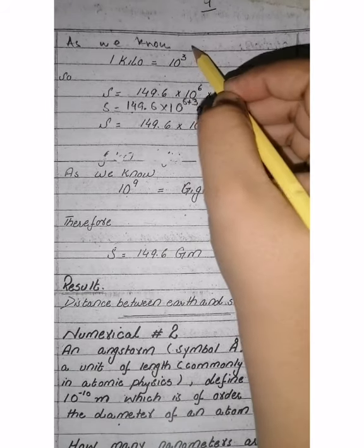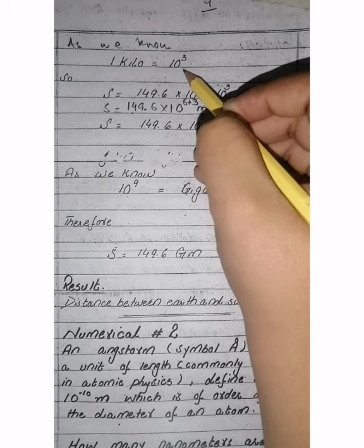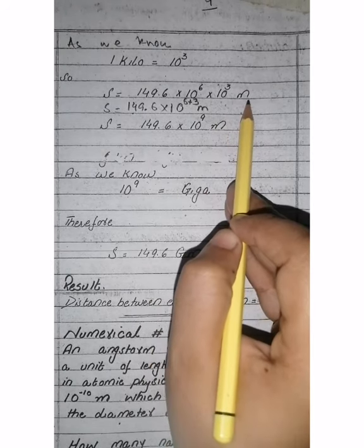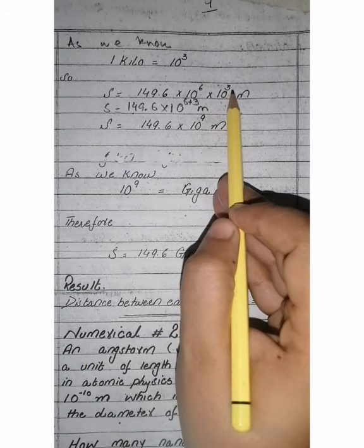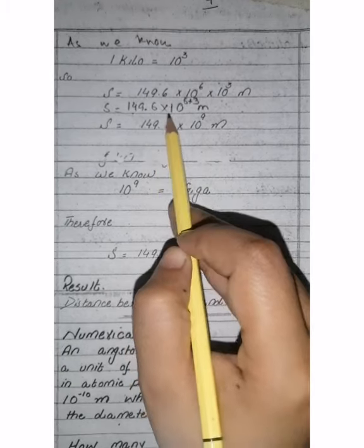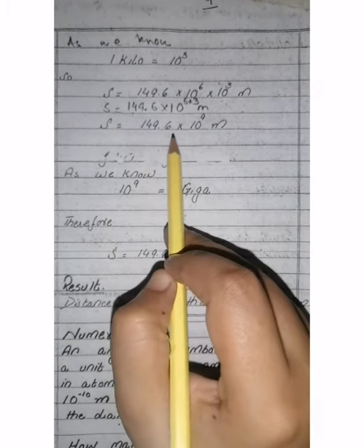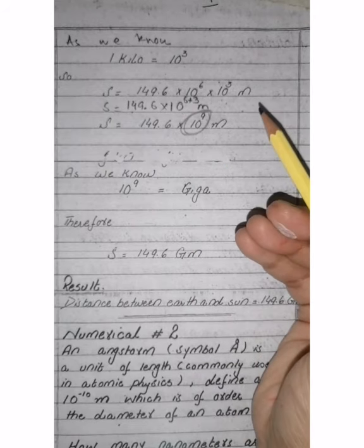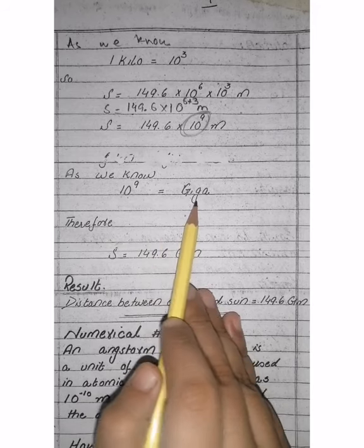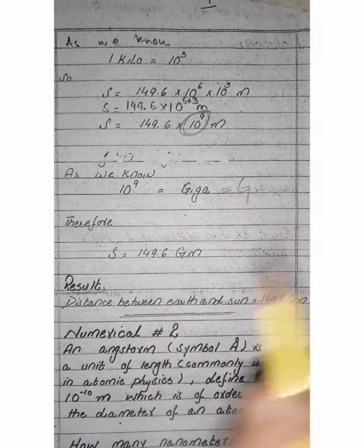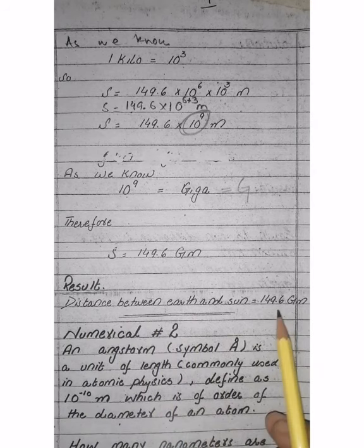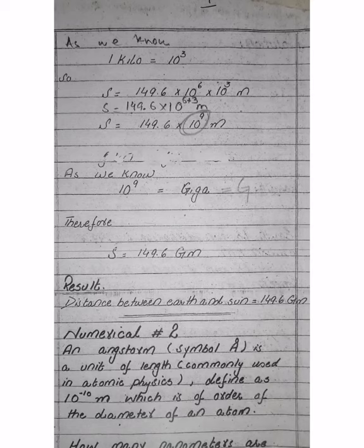As we know, 1 million is equal to 10 raised to the power of 6. So distance is equal to 149.6 into 10 raised to the power of 6 kilometer. Now we put the value of kilo: as we know, 1 kilo is equal to 10 raised to the power of 3. So 149.6 into 10 raised to the power of 6, and kilo becomes 10 raised to the power of 3 meters. Since the bases are the same, the powers add: 149.6 into 10 raised to the power of 6 plus 3 meters = 149.6 into 10 raised to the power of 9 meters. Now, 10 raised to the power of 9 is the prefix 'giga', denoted by capital G. Therefore, s is equal to 149.6 gigameters. The result: distance between Earth and Sun is equal to 149.6 gigameters.